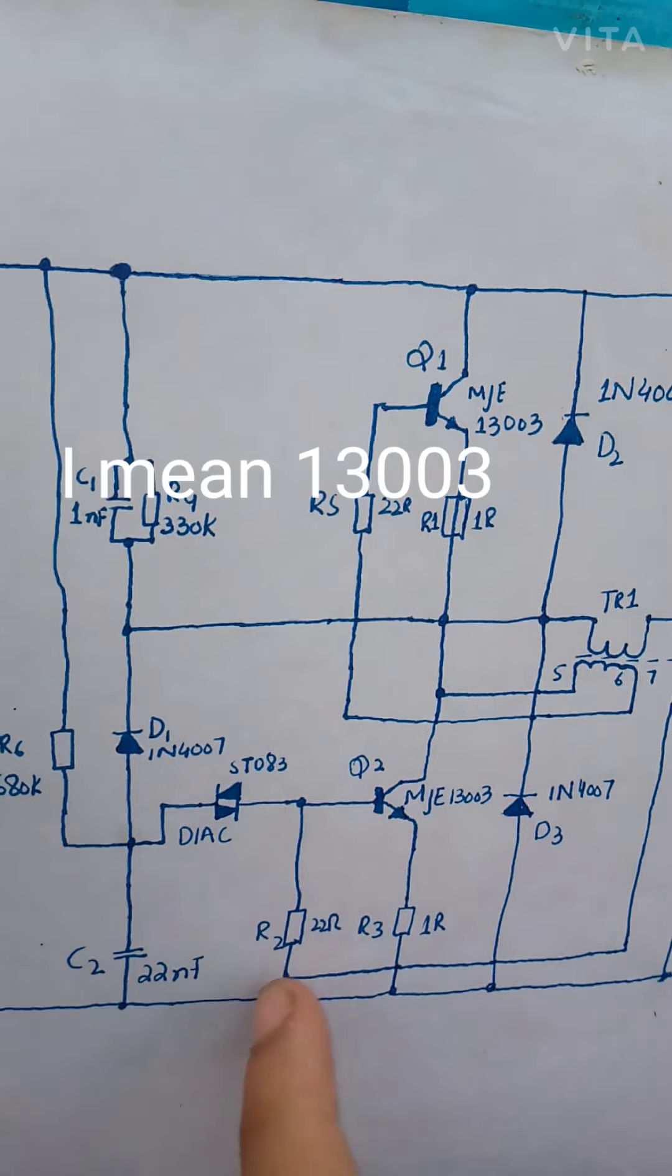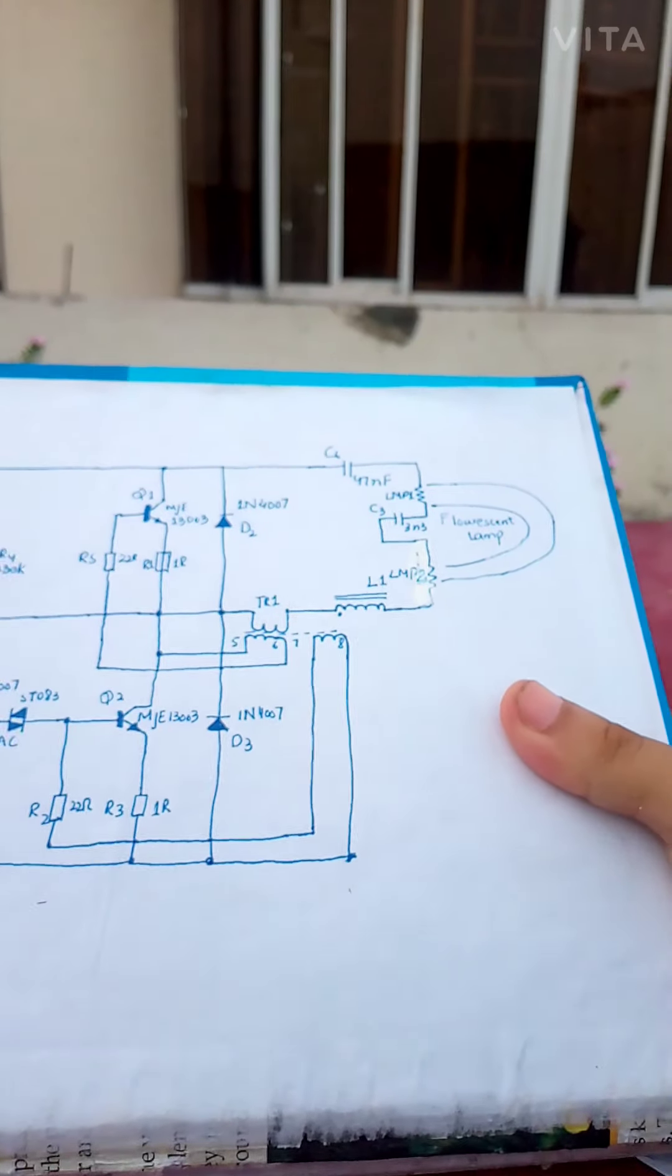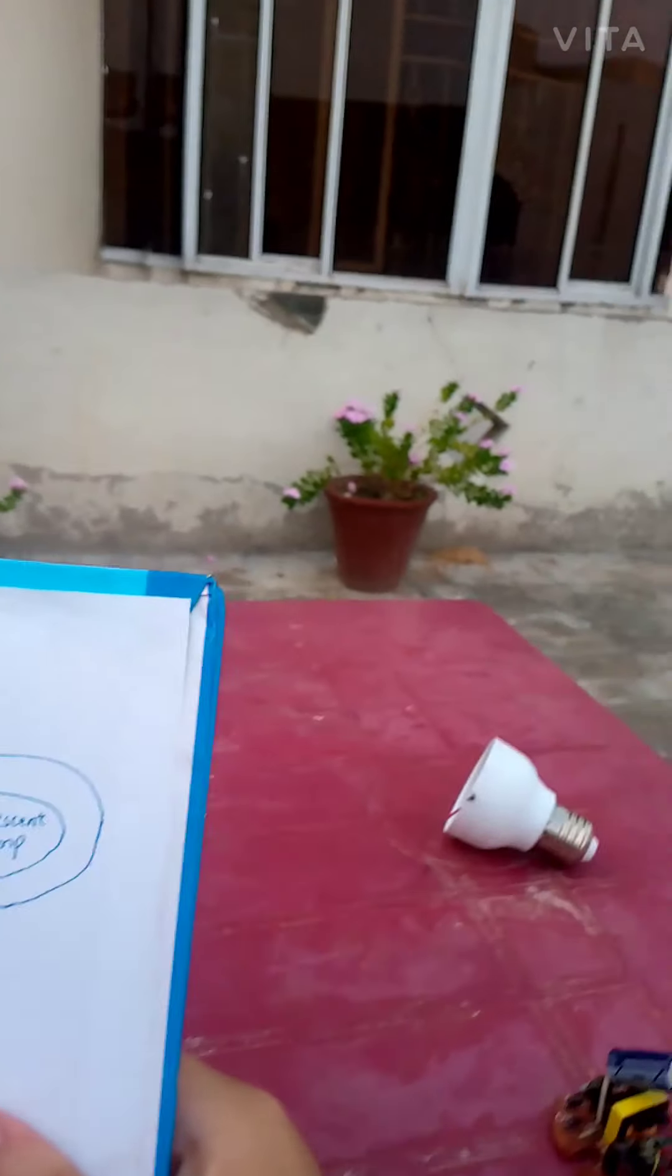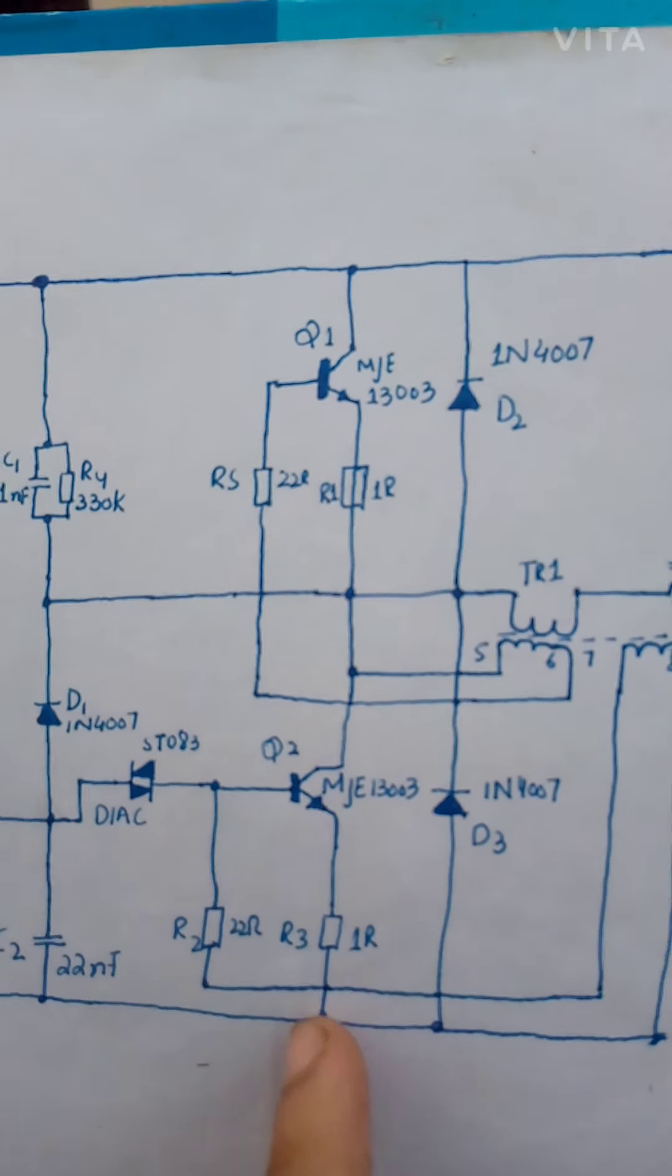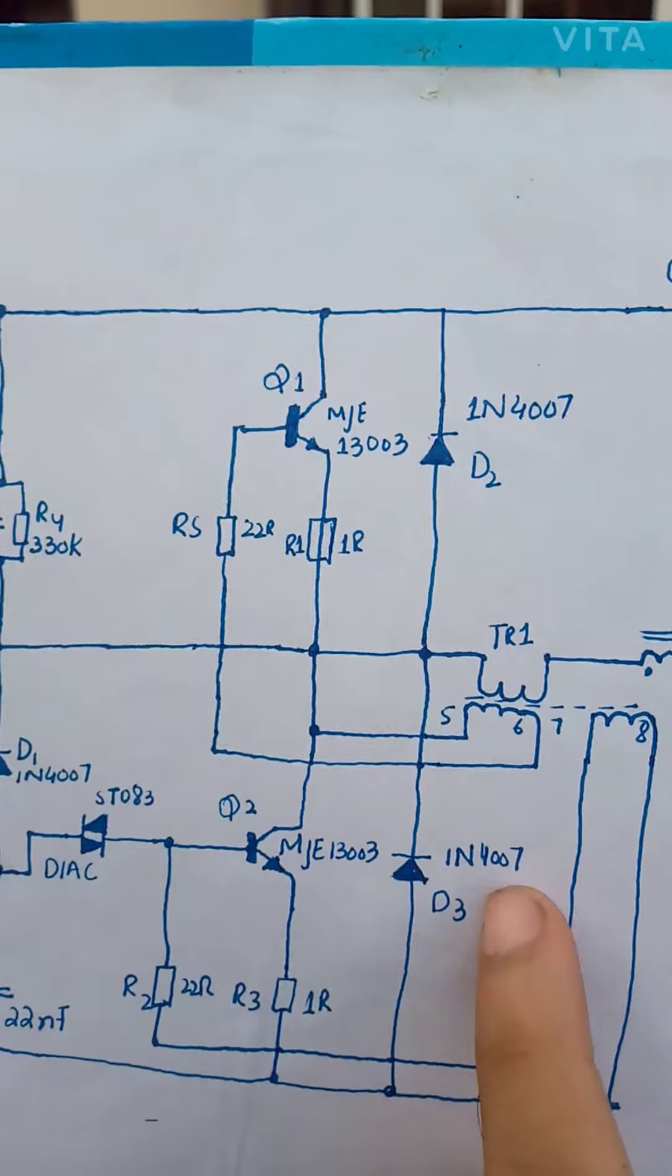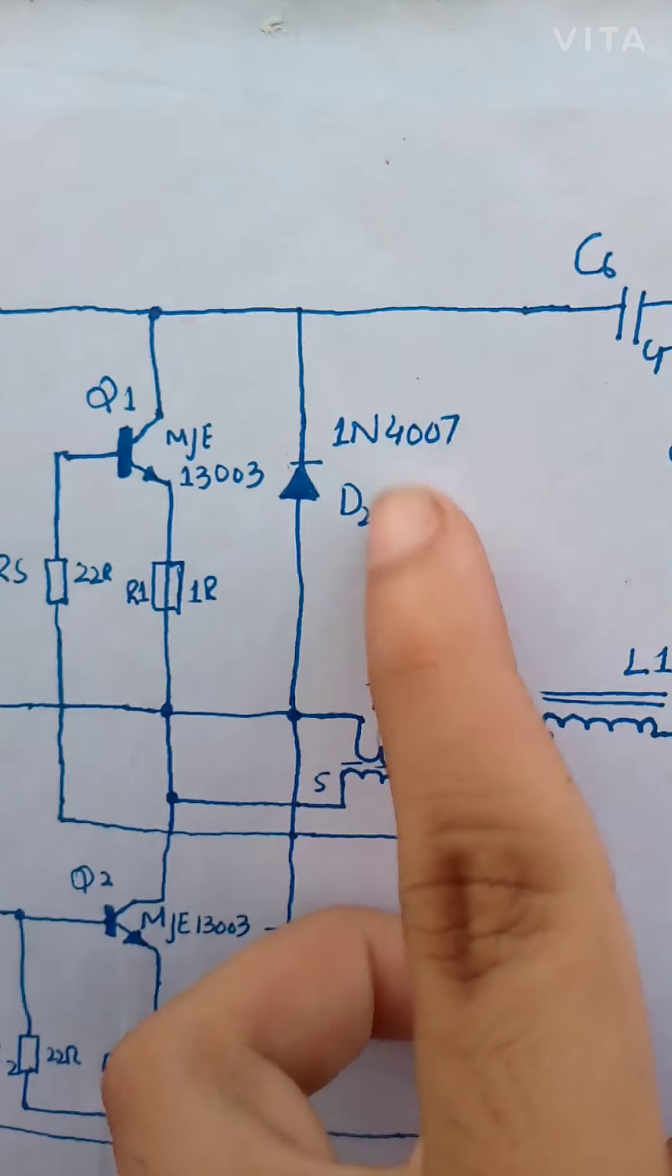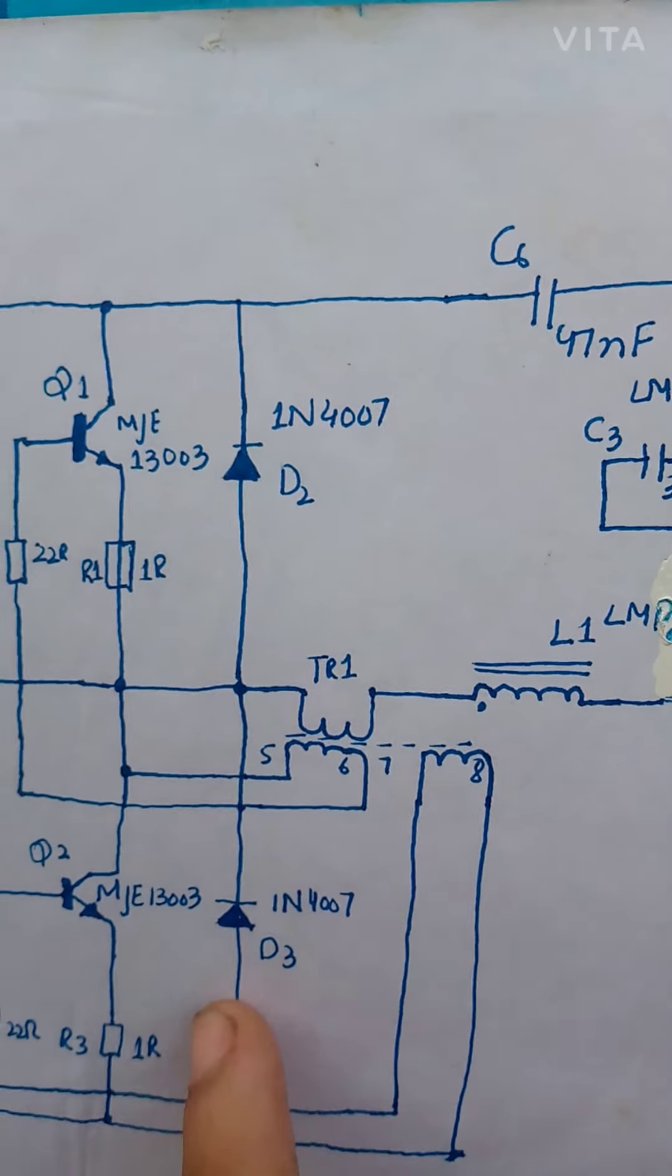This is a transformer, a tiny transformer right here. This transformer pin goes to ground. Ground is connecting to, I mean negative, negative connected to 1N4007 diode to this coil as well as 1N4007 to positive.